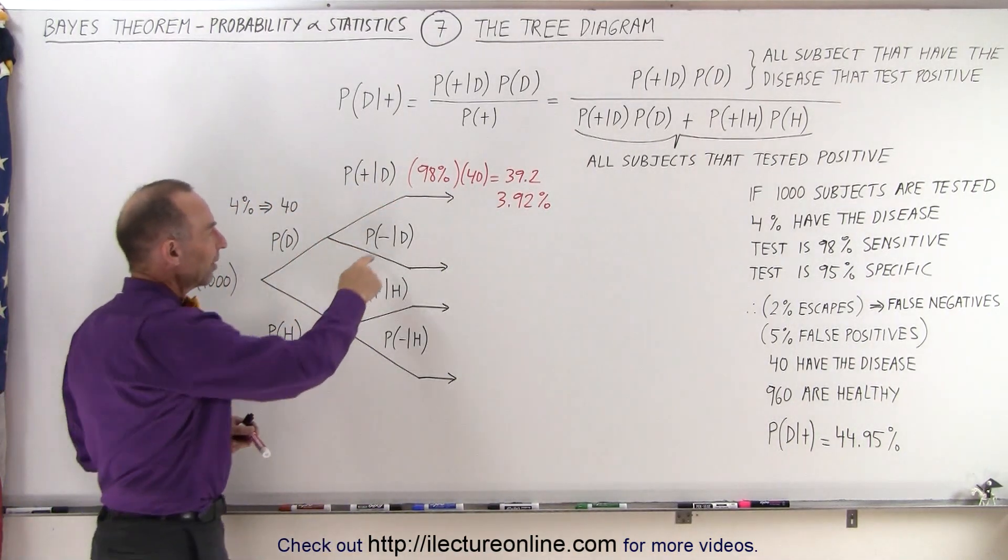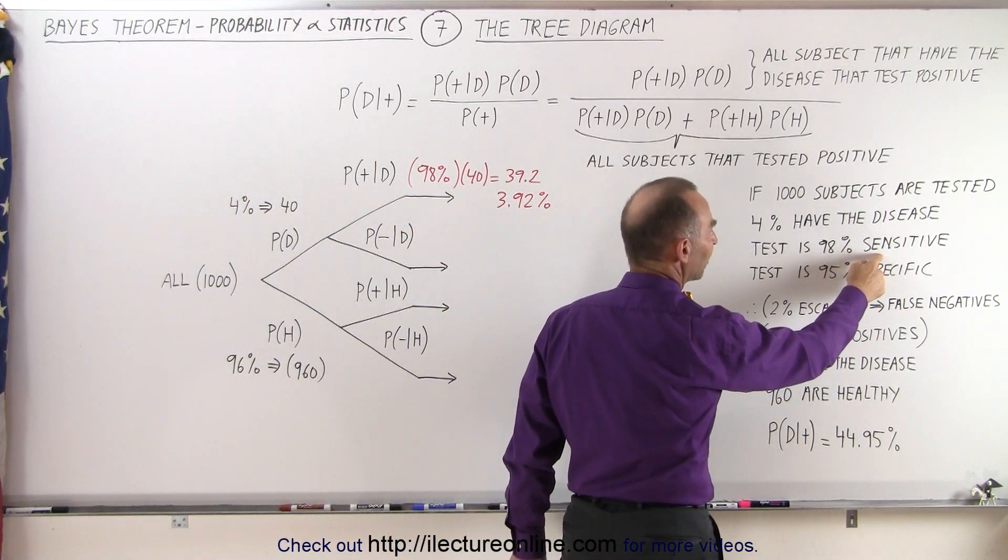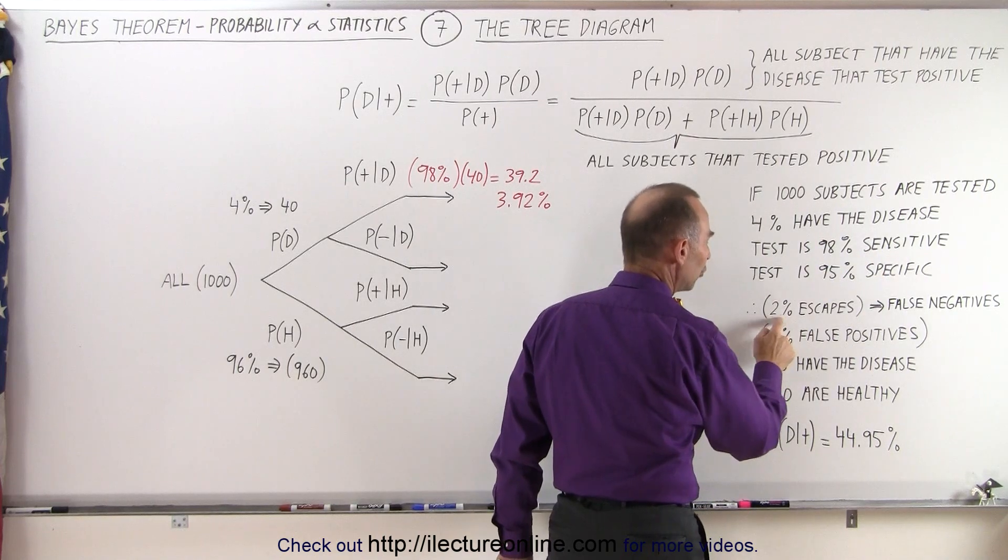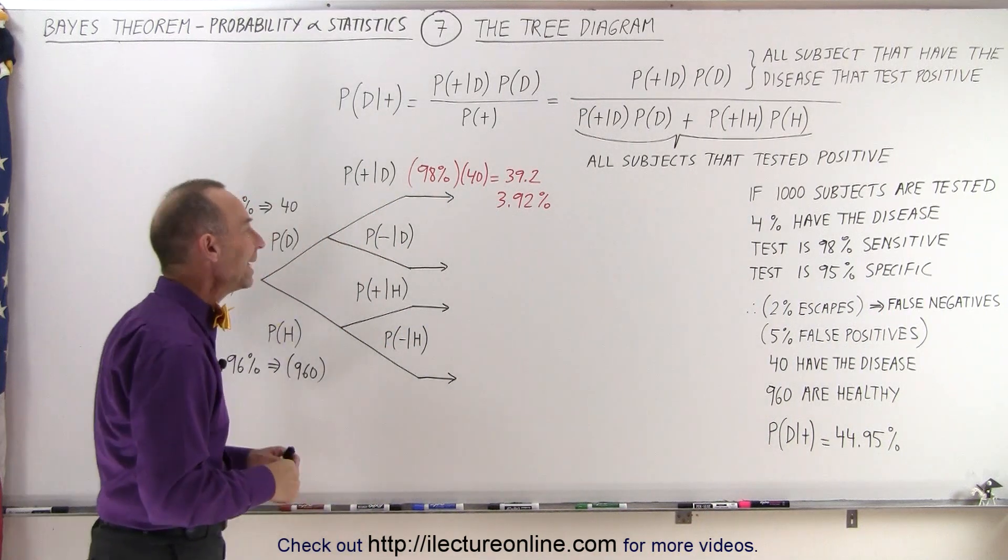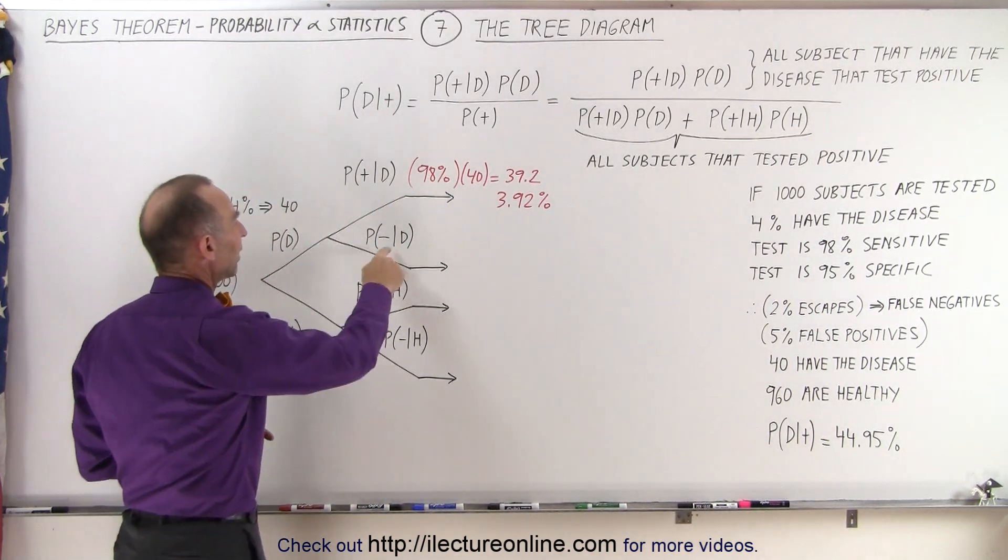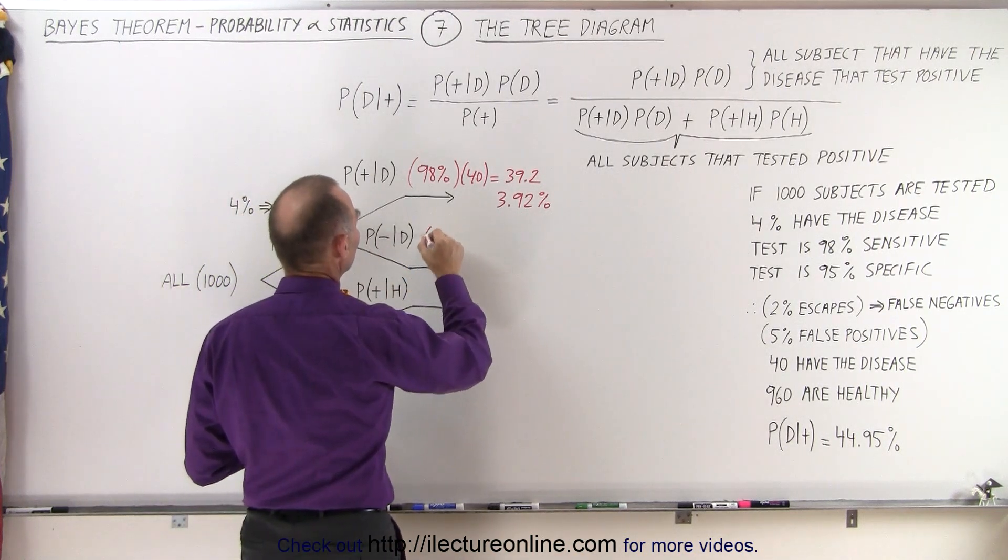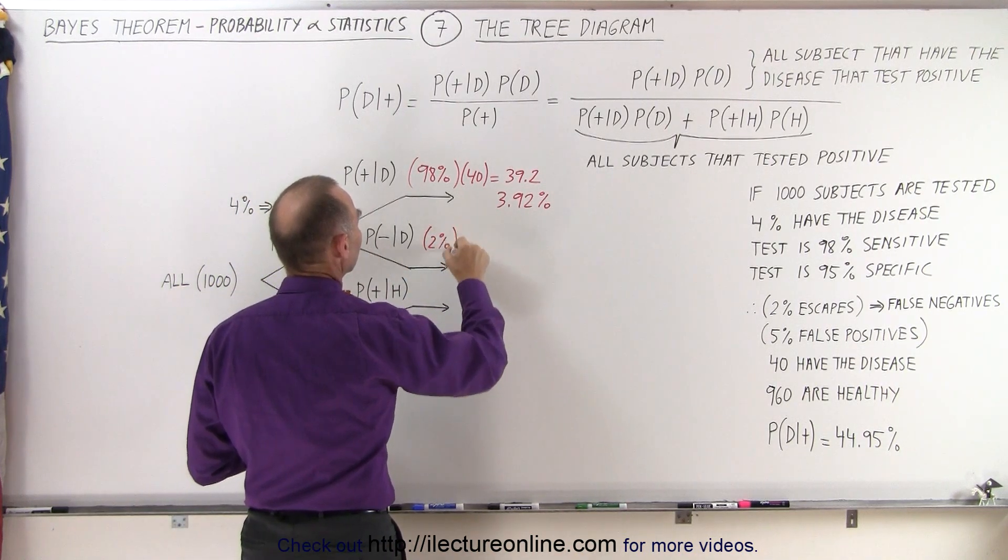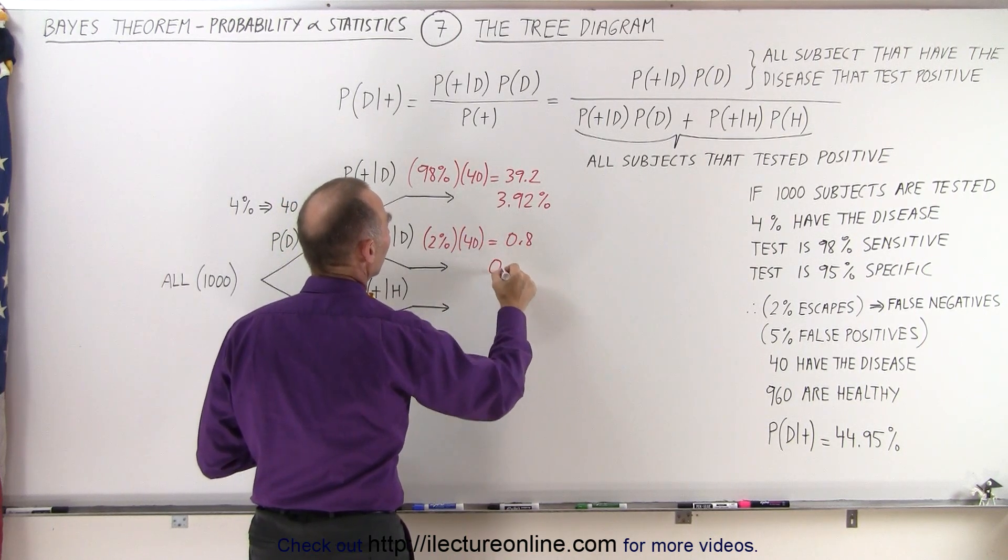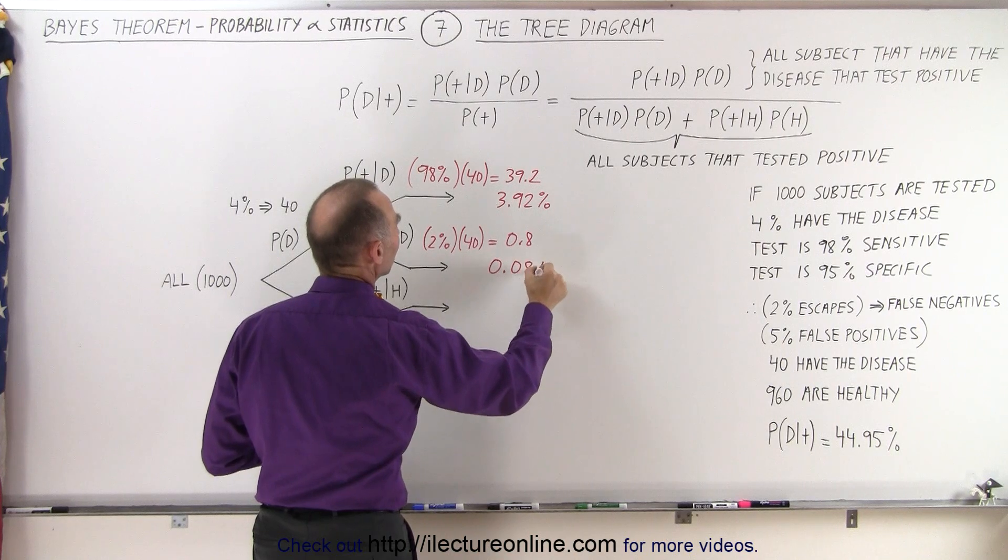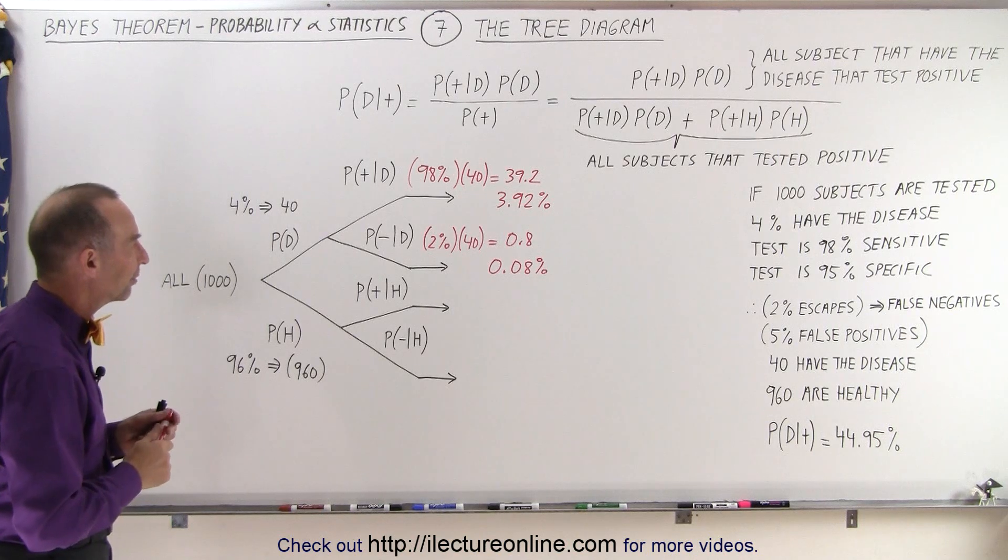How about the ones that test negative? Well, if 98% of the ones that have the disease test positive because that's the sensitivity, then 2% will be escaped. They will test falsely negative. So those that have the disease, what percent will test negative? Here we multiply 2% times the number that have the disease, which is 0.8, or 0.08% of the total number tested will test negative if they have the disease.